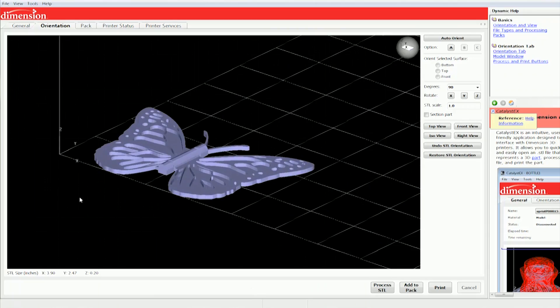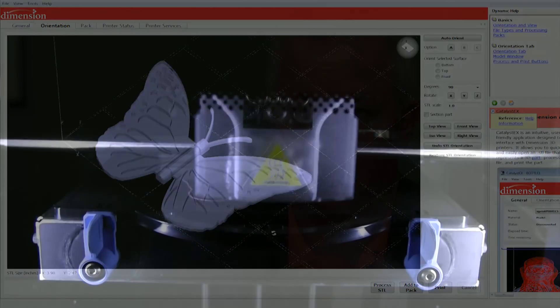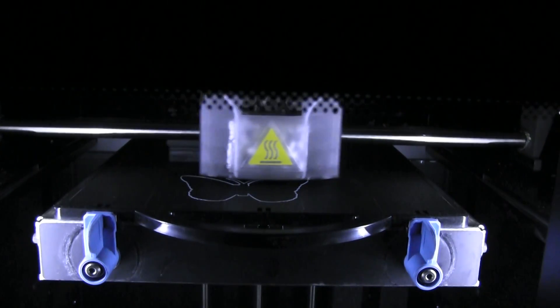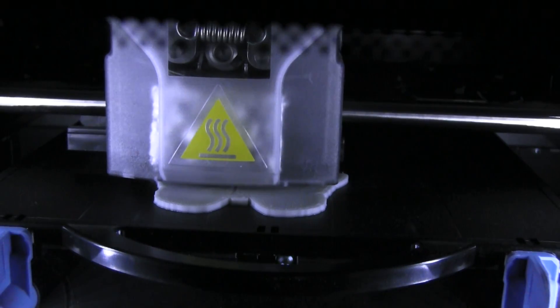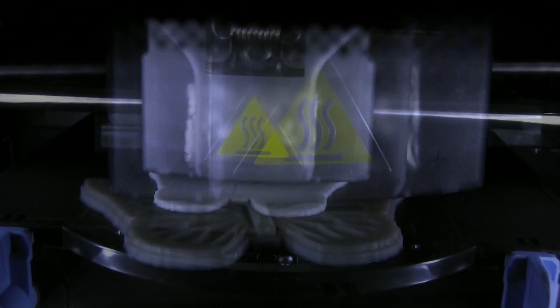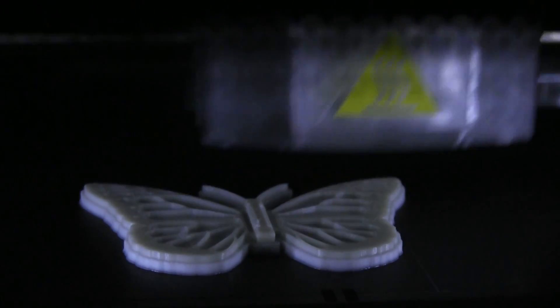With 3D printing you're essentially representing a 3D image in a physical form, and we thought that's a way we could actually allow blind people to see things they can't normally see by making a physical 3D representation of it.